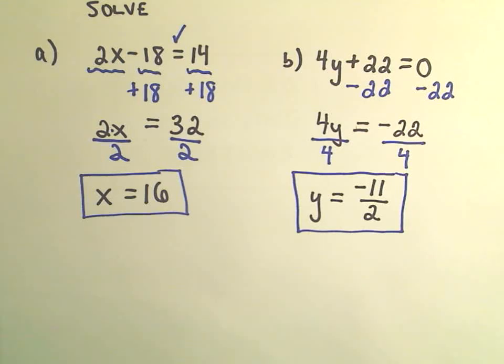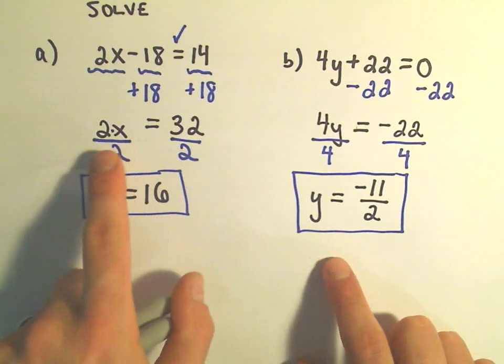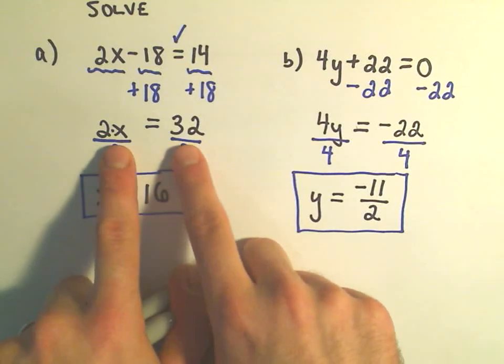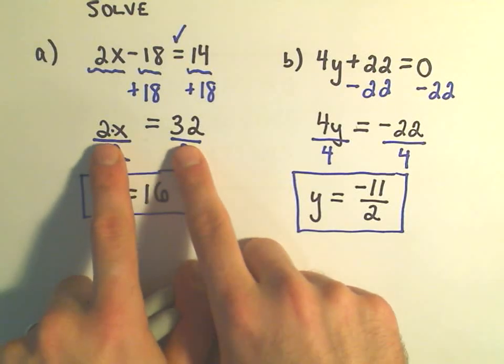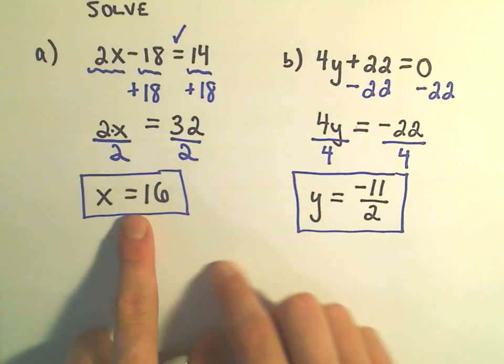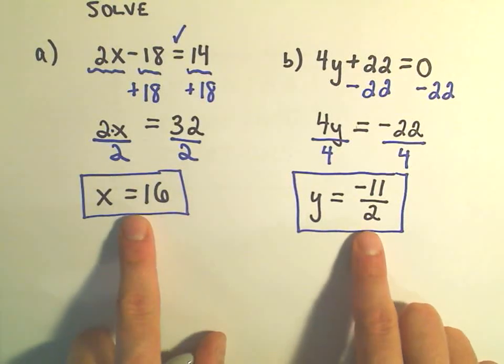Alright, so in another video, I'm going to do some more complicated linear equations where we have to distribute and combine some more like terms. But again, basic idea: try to put all the variables on one side, all the numbers on the other. Once you combine them, the basic idea is whatever number is in front of the variable, just divide by it. And then, once you simplify it and do the arithmetic, you've got your answer.